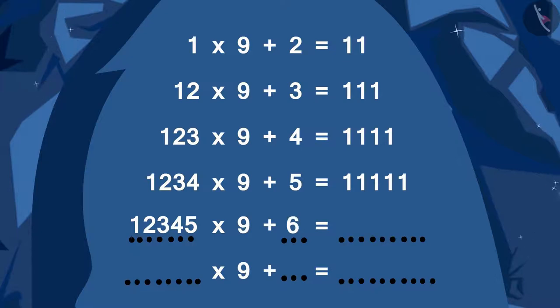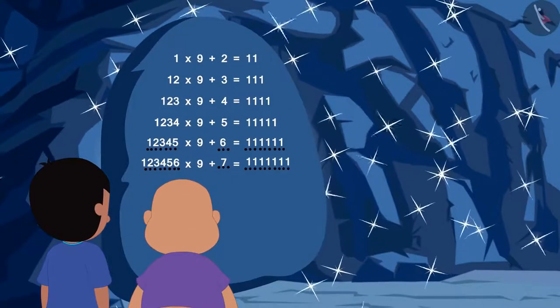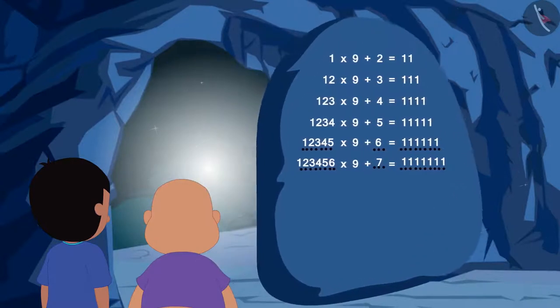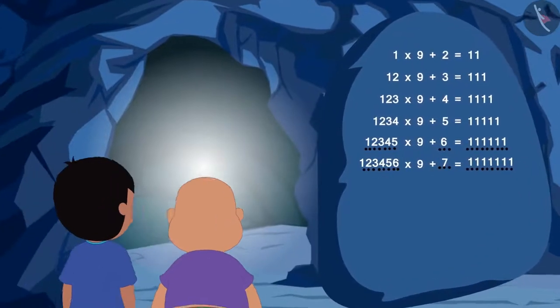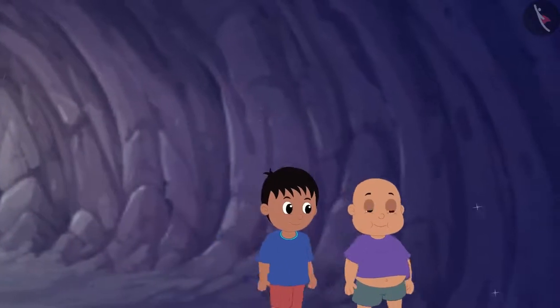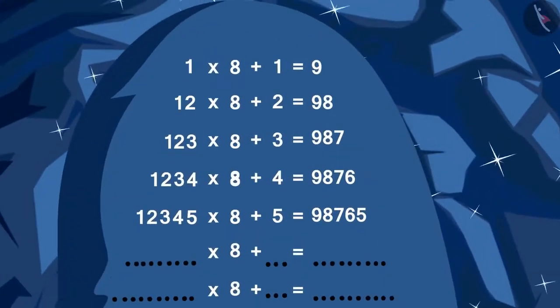Raju and Bablu filled in the blanks of the number pattern written on the wall of the cave. As he filled in the blanks, that cave door opened. Raju and Bablu got excited and went inside the cave. There, they found another door on which this number pattern is written.